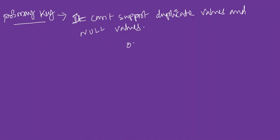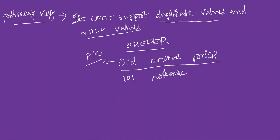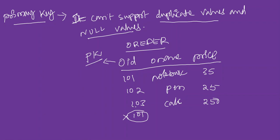For example, I have a table here with order ID, order name, and price. Order ID is the primary key. For example: 101 — notebook — 35 rupees; 101 — pen — 25 rupees; 103 — calculator — 250 rupees. If I enter 101 again, I get an error because primary key does not allow duplicate values or null values.